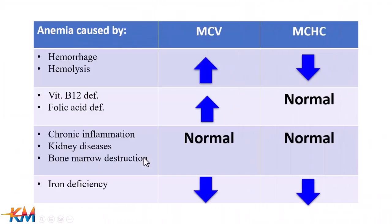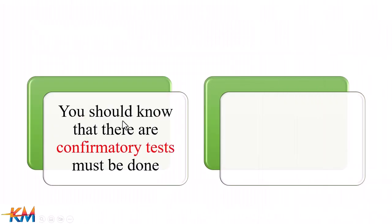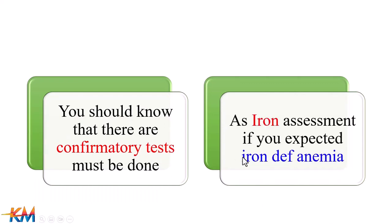The cause of microcytic hypochromic anemia is iron deficiency in the body, and it is called iron deficiency anemia. This table collects all the causes of anemia and the corresponding changes in MCV and MCHC. You should know that confirmatory tests must be done, such as serum iron assessment if iron deficiency anemia is suspected.